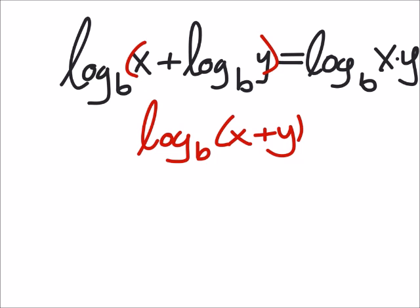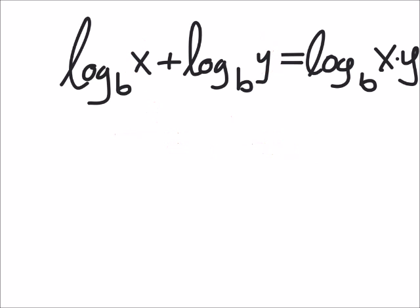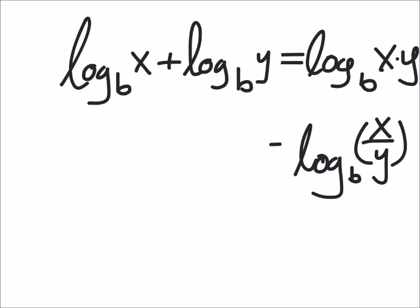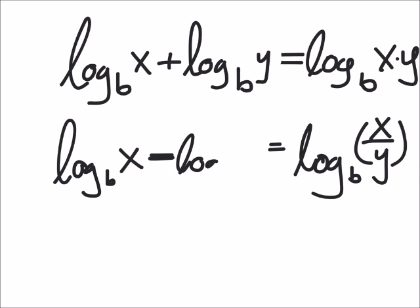Another rule is the quotient rule. If that's the product rule, naturally we'd be dividing the x and y. That would come from log base b of x, but now we're going to be subtracting the other log base b - same base but of y. So when we add the two logs with the same base we multiplied, now that we're subtracting we're going to be dividing.